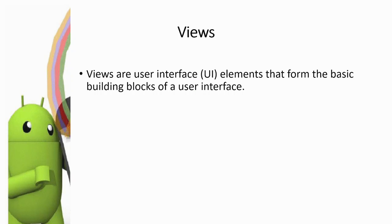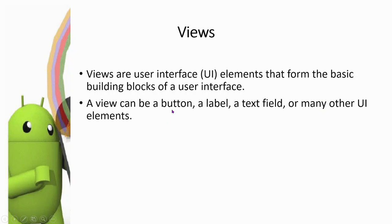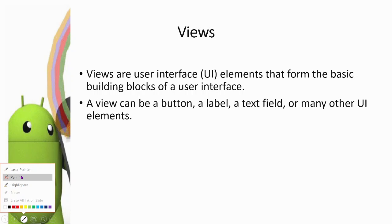The first component is the view. Views are user interface elements that form the basic building blocks of a user interface. In an Android application, we have all the basic elements that we can view. For example, in a sign-in form, you have a username field, a password field, and a submit button. These are views. A view can be a text view, an edit text, or a button.